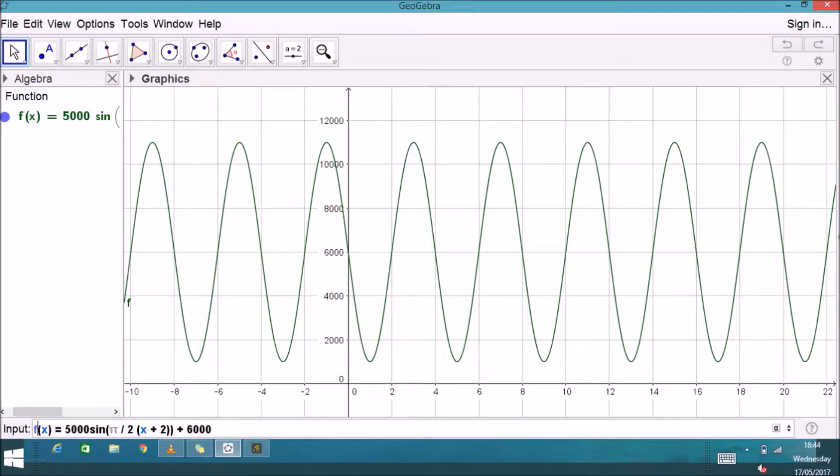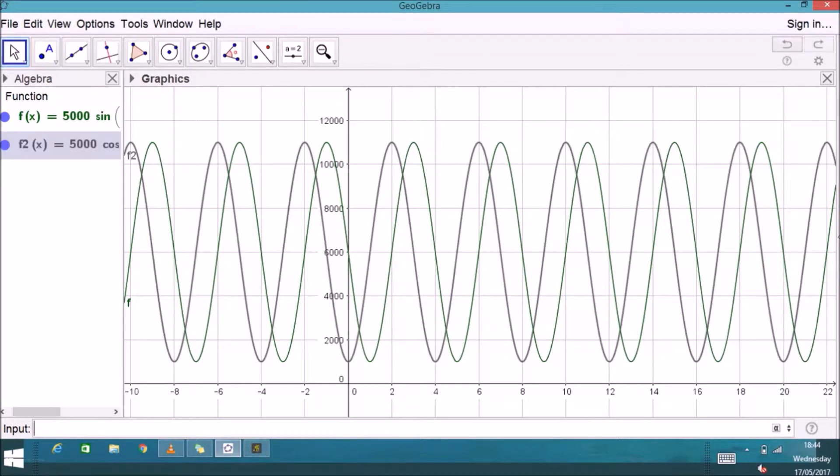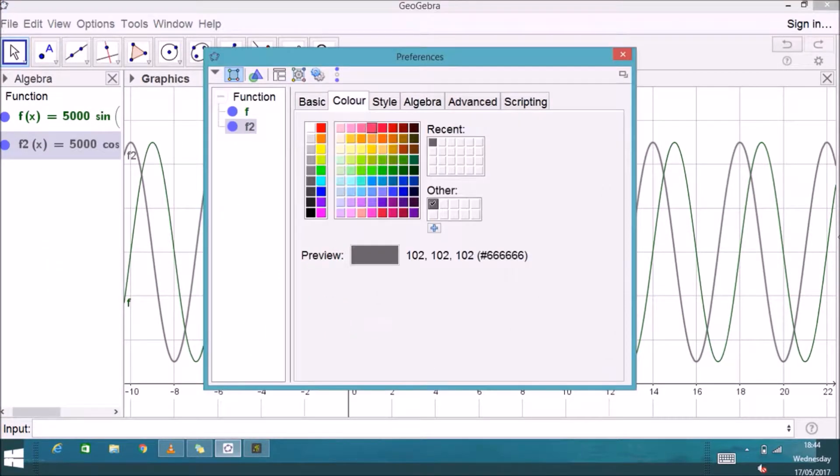Here's the sine function plotted and in GeoGebra I'm going to put in the cosine function as well. We're going to leave everything exactly the same except I'll change the sine to cosine and we'll see how this affects the function.